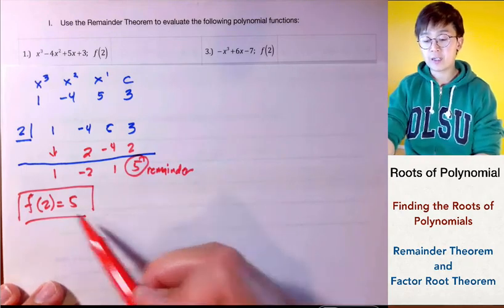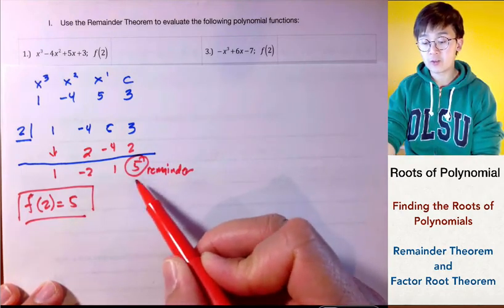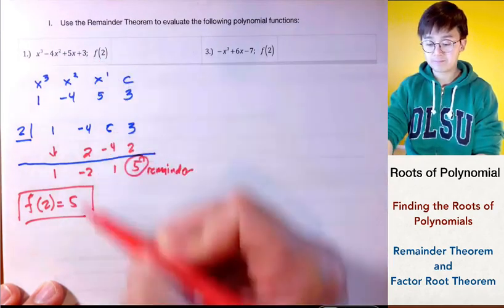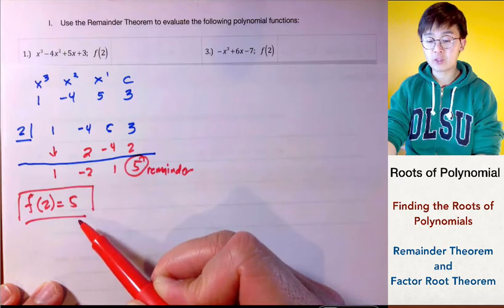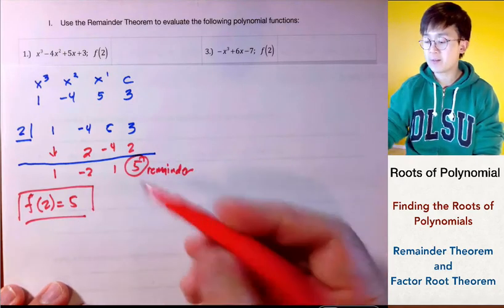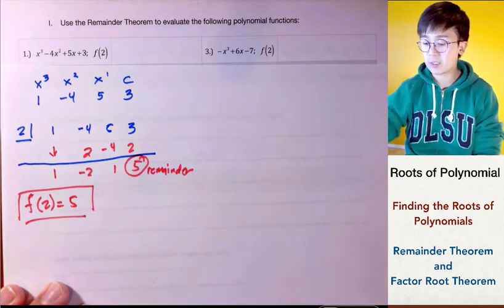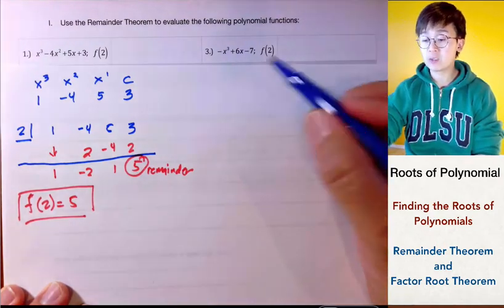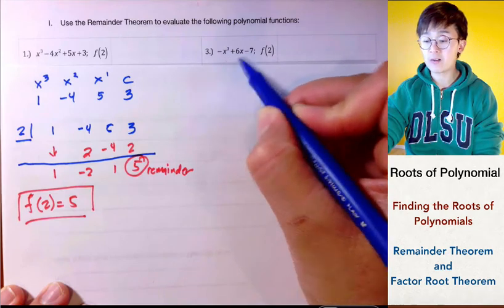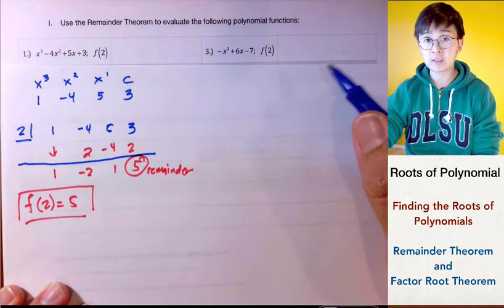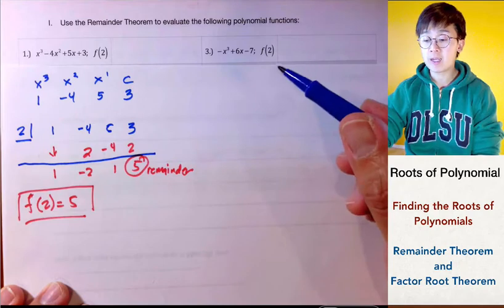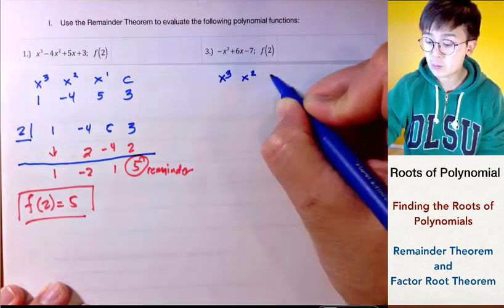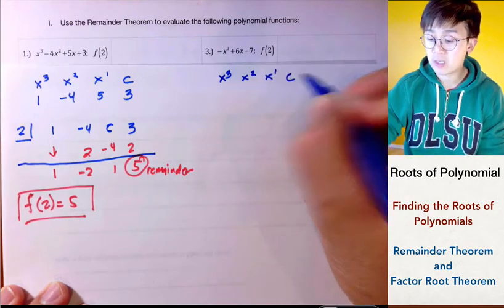To verify, you can substitute the value of 2 into your cubic function and it will equal 5. For our second problem, we have negative x cubed plus 6x minus 7. Notice that we have a cubic function but only three terms, which means there is a missing term in our standard form.